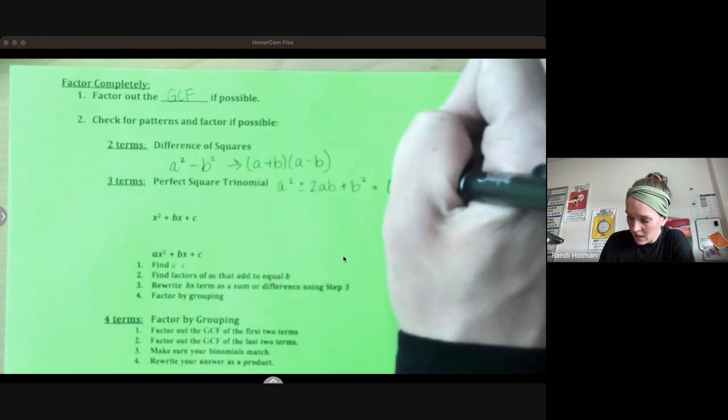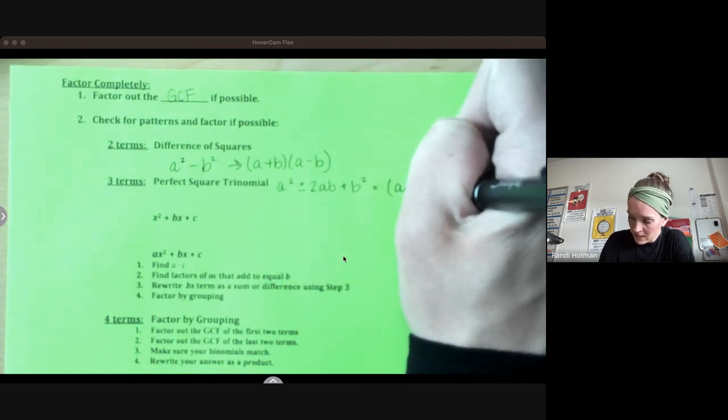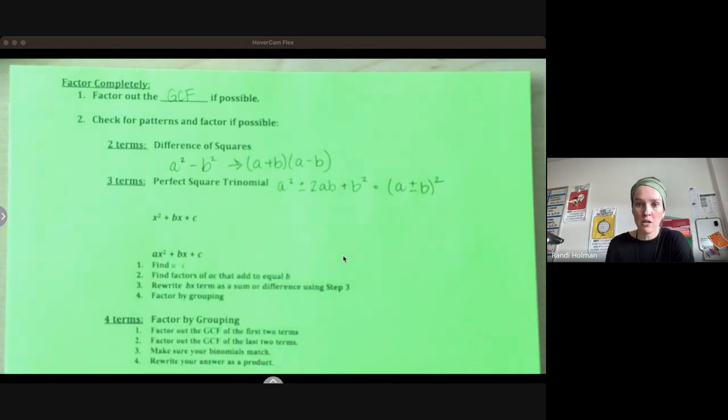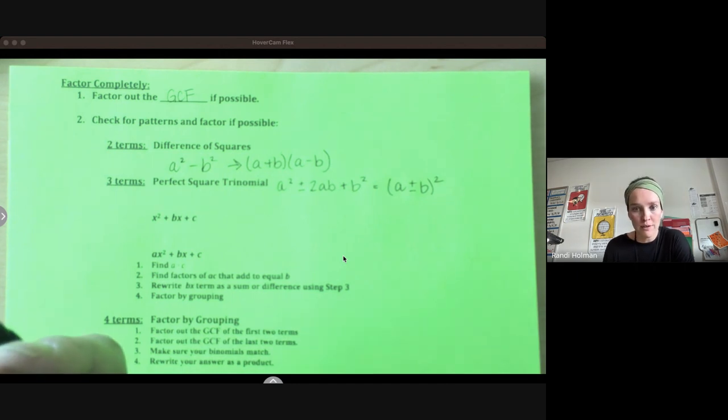If that's the case, this factors to the first thing, same sign as here, the second thing squared. It's a perfect square trinomial. It comes from squaring a binomial. And again, that's one that if you recognize it, great, it'll make your factoring more efficient. If you don't, that doesn't mean all hope is lost. You can still factor using other tools.